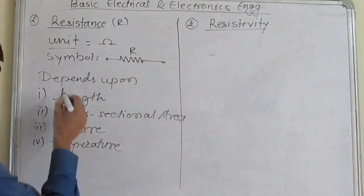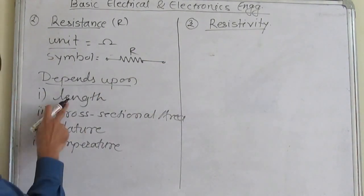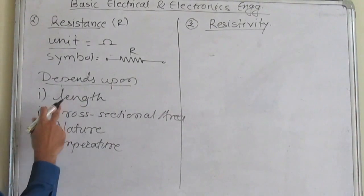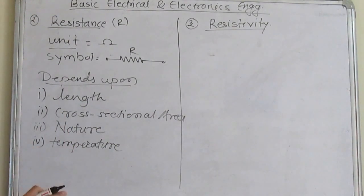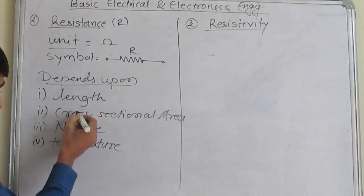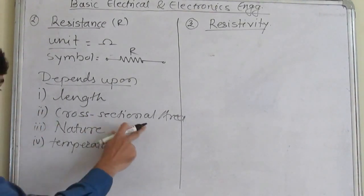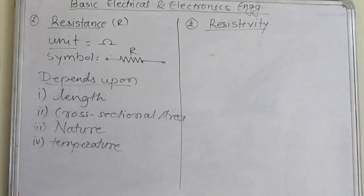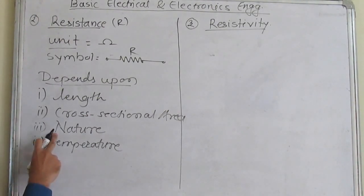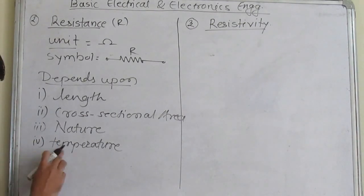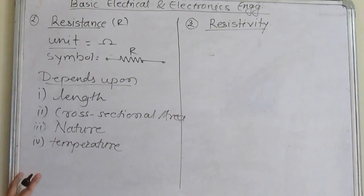The resistance depends upon: first, the length of the conductor — when the length increases, resistance increases, meaning length and resistance are directly proportional. It also depends upon the cross-sectional area of a conductor — resistance is inversely proportional to the cross-sectional area. Then it depends upon the nature of the conductor, and also upon the temperature of the conductor. Depending upon the temperature coefficient, resistance has two different types.